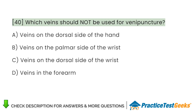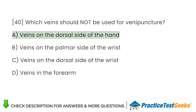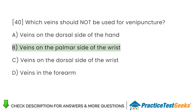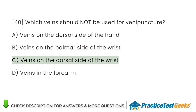Which veins should not be used for venipuncture? A. Veins on the dorsal side of the hand. B. Veins on the palmar side of the wrist. C. Veins on the dorsal side of the wrist. D. Veins in the forearm.